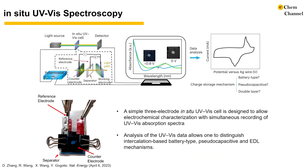In our recent work, we showed that in-situ UV-Vis spectroscopy could also provide information about the oxidation state changes in materials, using a desktop UV-Vis spectrometer and a 3-electrode in-situ UV-Vis cell to allow electrochemical characterization with simultaneous recording of UV-Vis absorption spectra. Compared to the exquisite in-situ TEM holder that can cost hundreds of thousands of dollars, this simple cell made from glass and tape has a negligible cost. The active materials are sprinkled onto the glass and the electrolyte can be injected into the cavity surrounded by the spacer formed by the tapes.